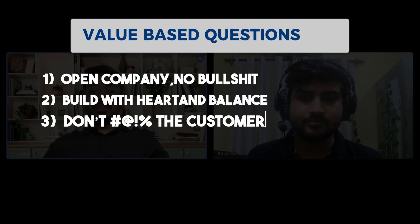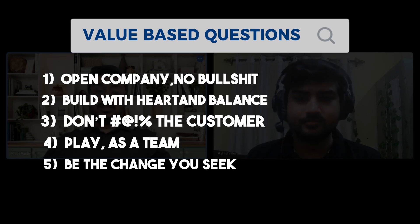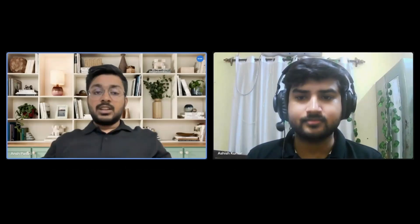Atlassian has five core values stated on its website. They check whether you have any or all of those values, or at least a gist of them — enough to be a fit for the team and company. Since my majors were in Electronics and Communication, the interviewer asked me questions like how I managed my time and my CGPA. There were also non-technical questions from my projects — not tech-based, but things like how you build a team and how you decide who to work with.